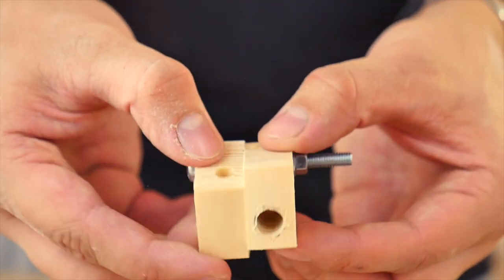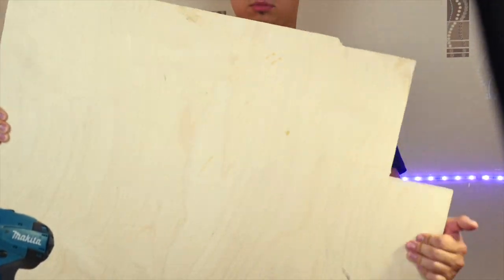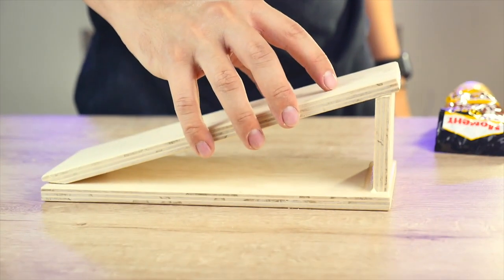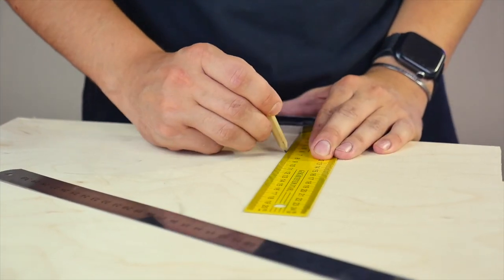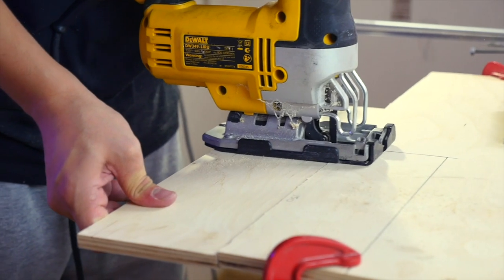Now, we put the hinge aside and take the plywood. It will be needed for the body of the sharpener. After marking, we sequentially cut out the details and get a constructor.